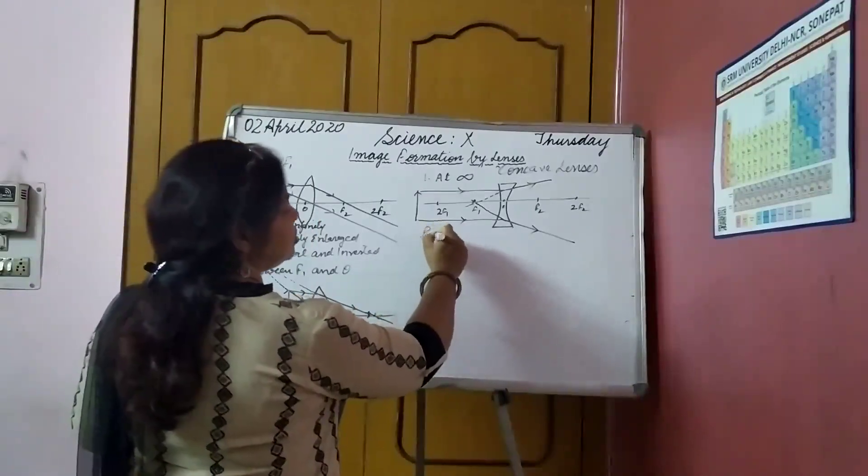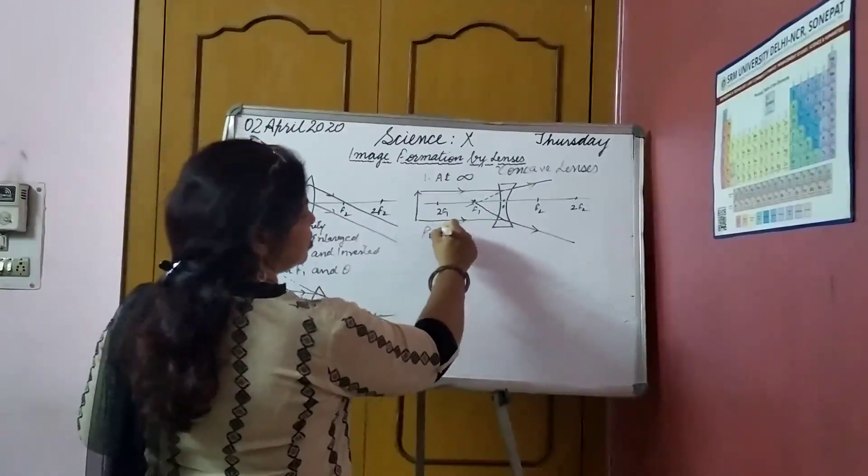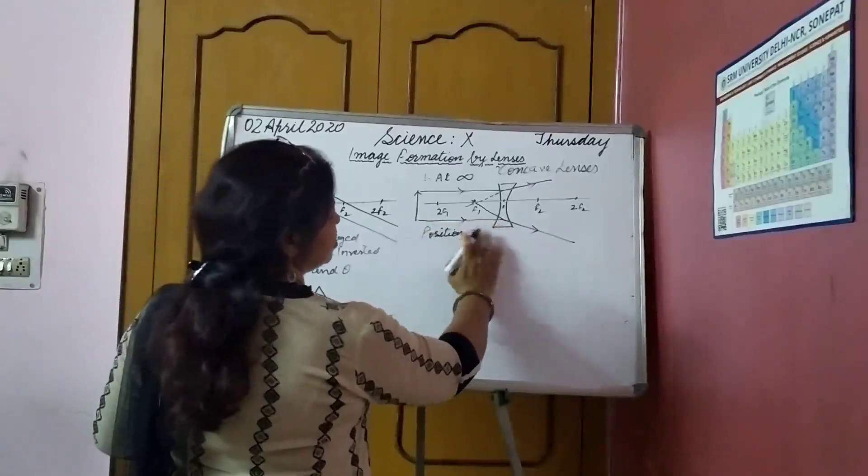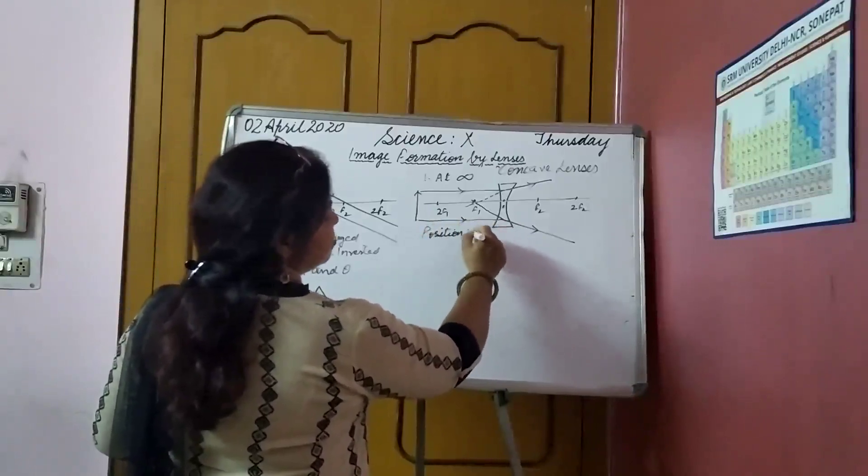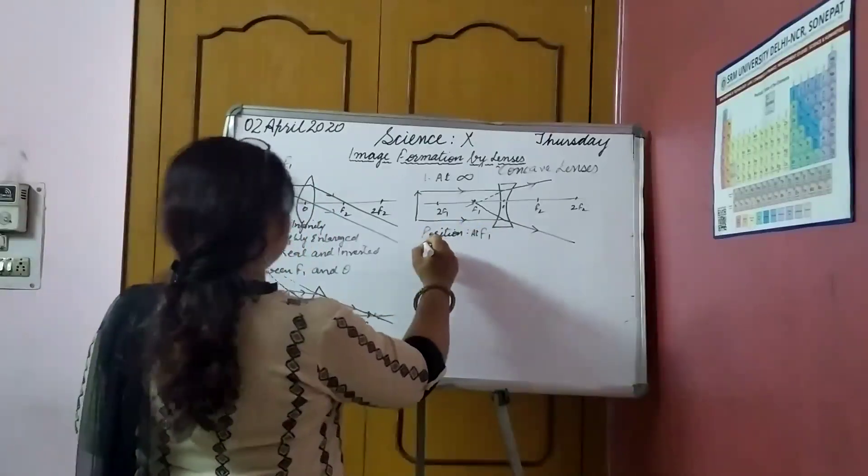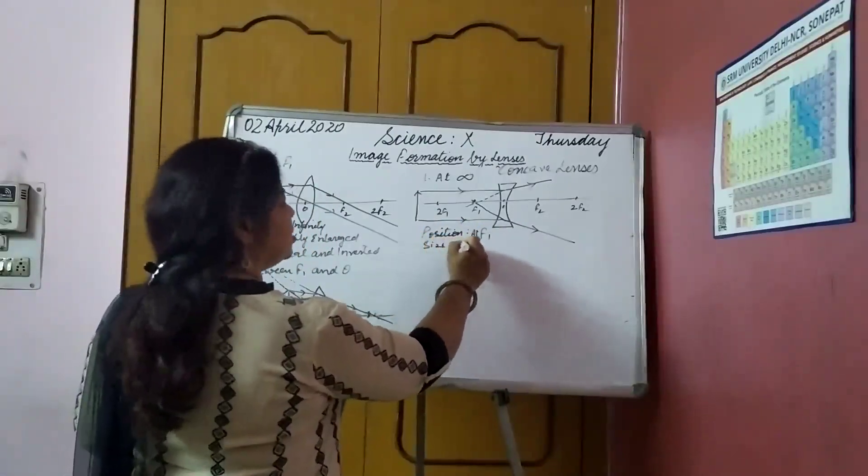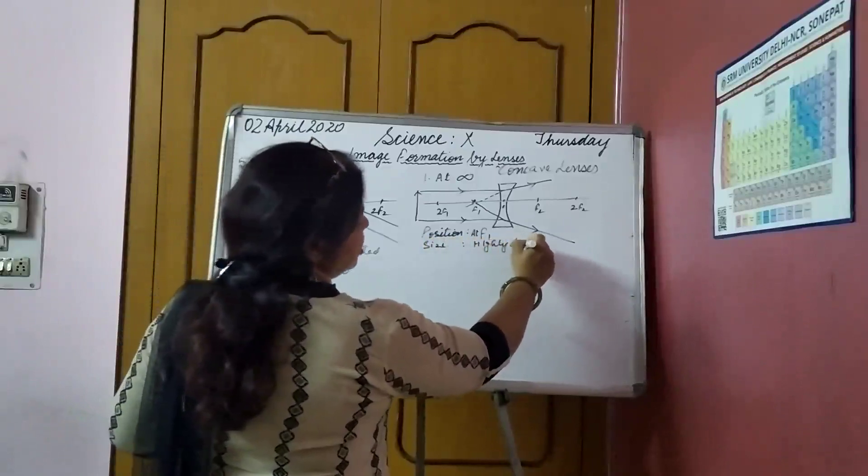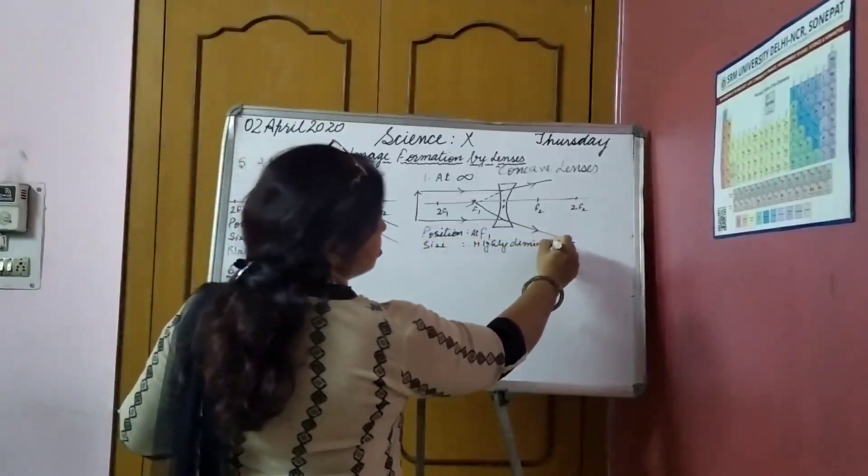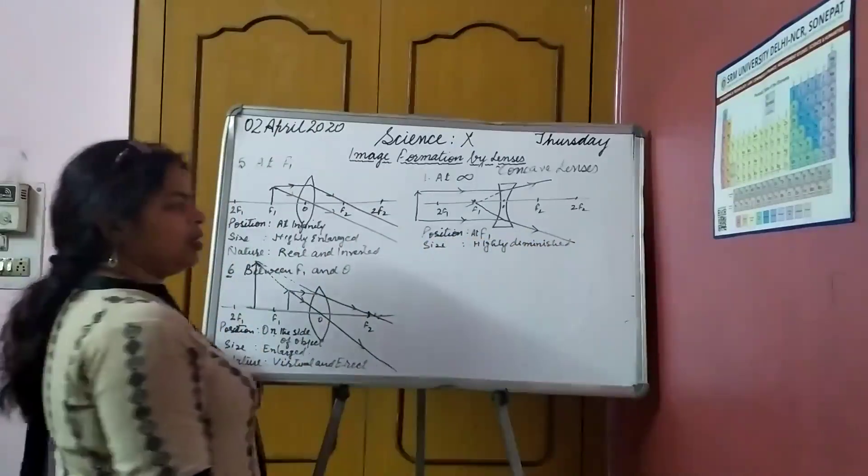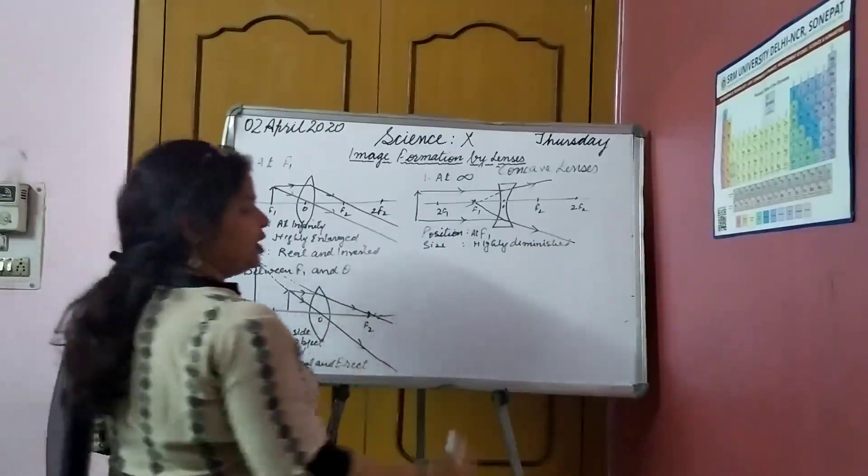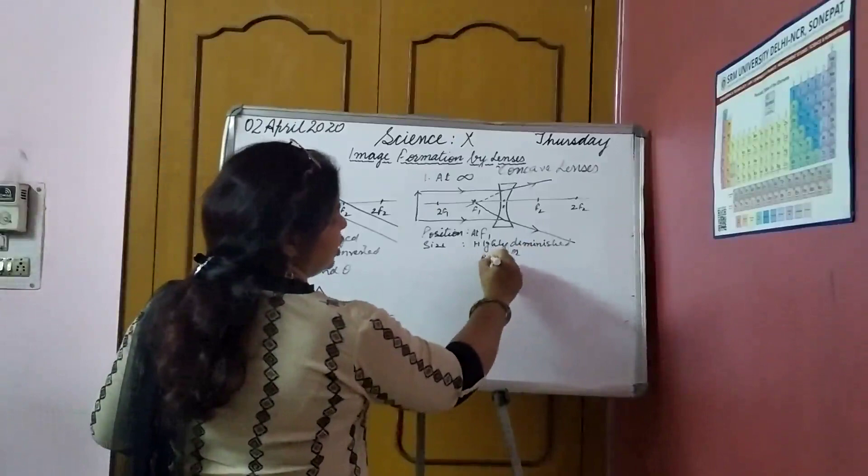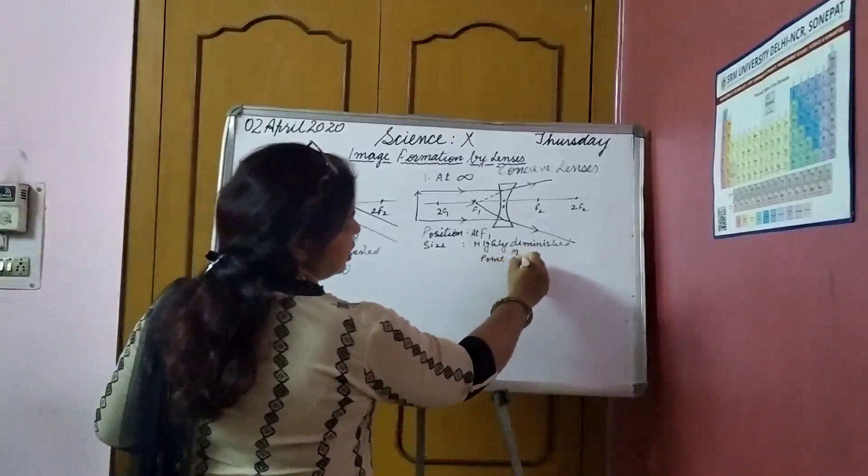What is the position? Position of the image formed at f1. Then, what is the size? It is highly diminished. Okay. Highly diminished or point sized. Or we can write point sized.